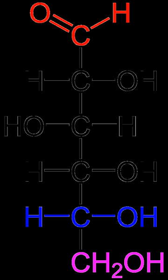Monosaccharides are the simplest carbohydrates in that they cannot be hydrolyzed to smaller carbohydrates. They are aldehydes or ketones with two or more hydroxyl groups. The general chemical formula of an unmodified monosaccharide is (CH2O)_n, literally a carbon hydrate. Monosaccharides are important fuel molecules as well as building blocks for nucleic acids. The smallest monosaccharides, for which N=3, are dihydroxyacetone and D- and L-glyceraldehydes.